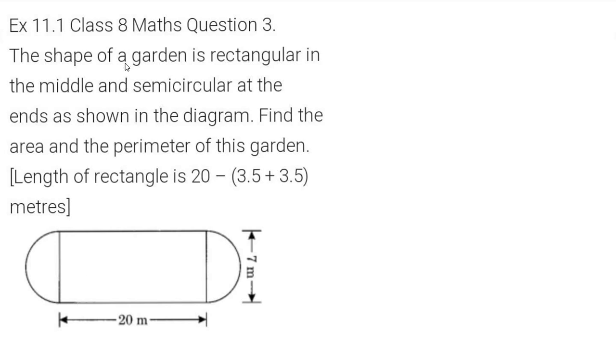Let's read the question. The shape of a garden is rectangular in the middle and semicircular at the ends, as shown in the diagram. Find the area and perimeter of this garden. The length of the rectangle is 20 minus (3.5 + 3.5) meters.